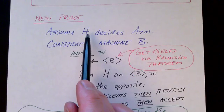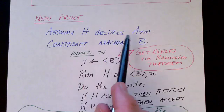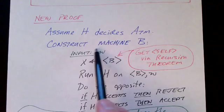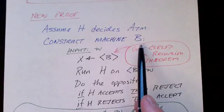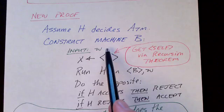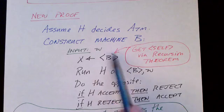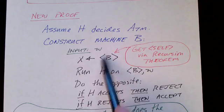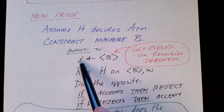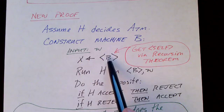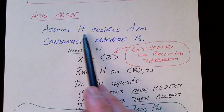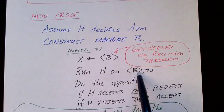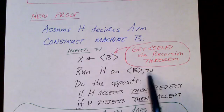Here's how it works. Assume that we have an algorithm, call it H, that decides the acceptance problem for Turing machines. This is a proof by contradiction. So now construct machine B. Machine B takes as input some string W, and it says: get via the recursion theorem a description of B itself. We know this is a legal statement, so we're assigning to X a description of machine B. Then, since we've assumed we have a decider H for the acceptance problem, we run H on the description of B and W to see whether B would accept W or not.